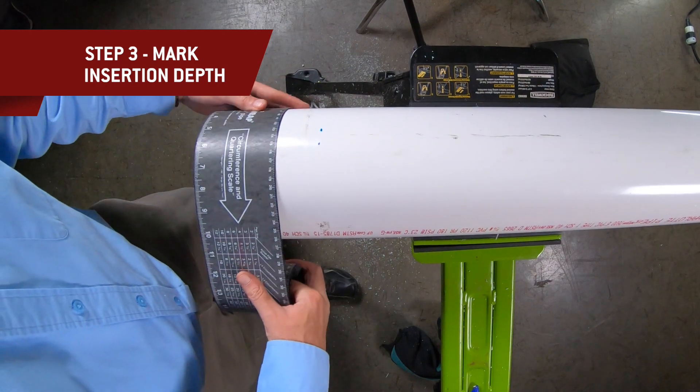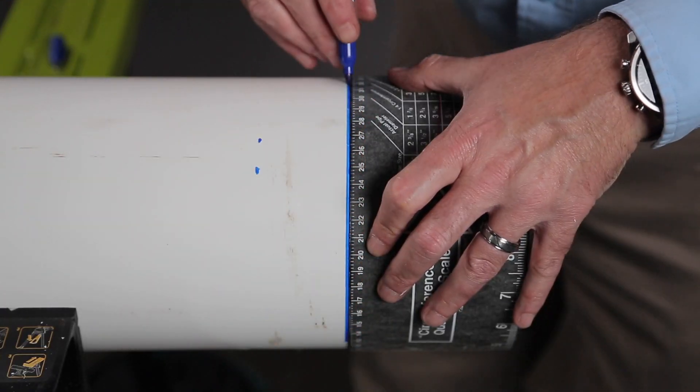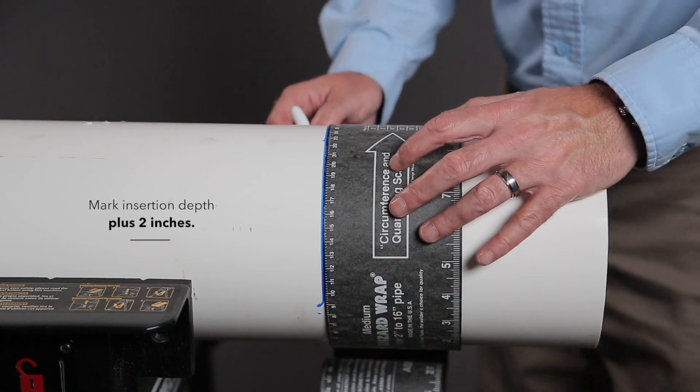Next, using a pipe wrap as a straight edge, mark the insertion depth of the fitting. Then make a second mark two inches past the insertion depth.